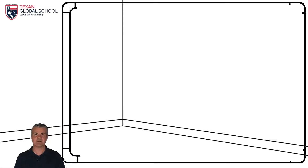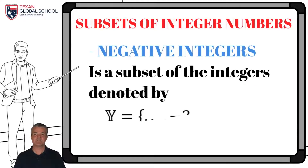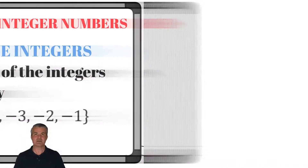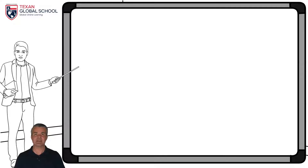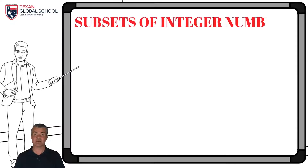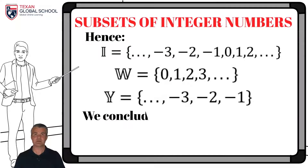As we saw in the definition, the integers also contain the subset of the negative integers, represented by the letter Y. Its elements are the additive inverse of the natural numbers, such as minus one, minus two, minus three, up to infinity, maintaining that sequence. Analyzing the elements of these sets, we can conclude that the set of integers is equivalent to the union of the set of whole numbers with the negative integers.